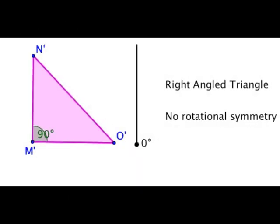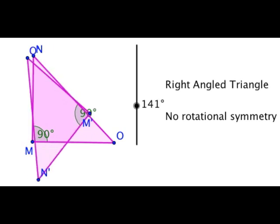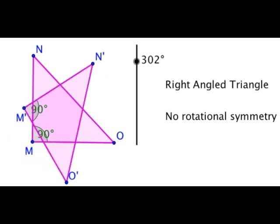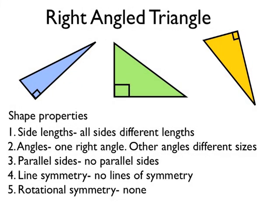Let's have a look at why right angle triangles have no rotational symmetry. As we rotate this right angle triangle through one whole turn, it doesn't look like it does in the original position at any point until one complete turn is done. Only when I've done one complete turn does the shape look like it does in the original position, so it has no rotational symmetry. Right angle triangles have sides which are all different lengths, one right angle, the other two angles are different, no parallel sides, no lines of symmetry, and no rotational symmetry.